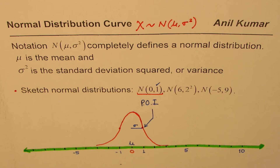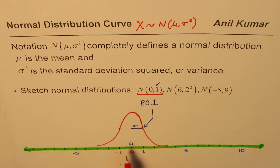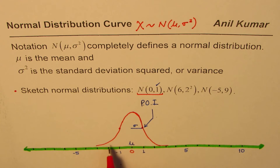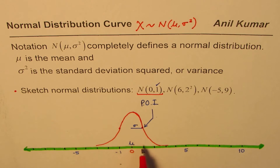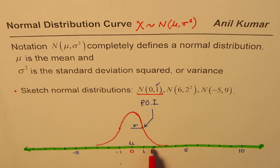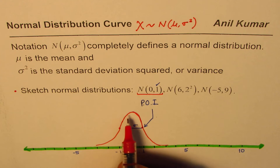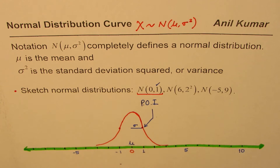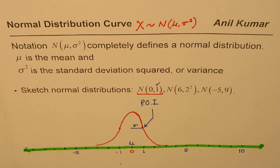Another important property: the area under the normal distribution curve is always equal to 1. It is difficult to calculate the exact height, but stating that the area is 1 is sufficient for our purposes.